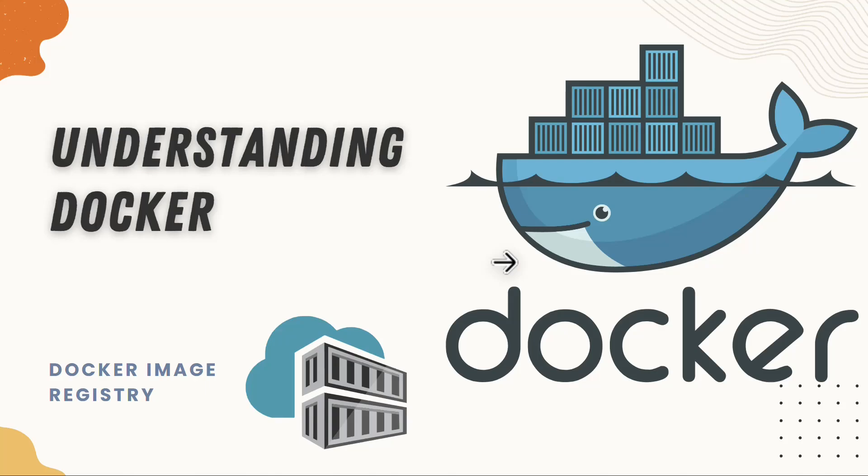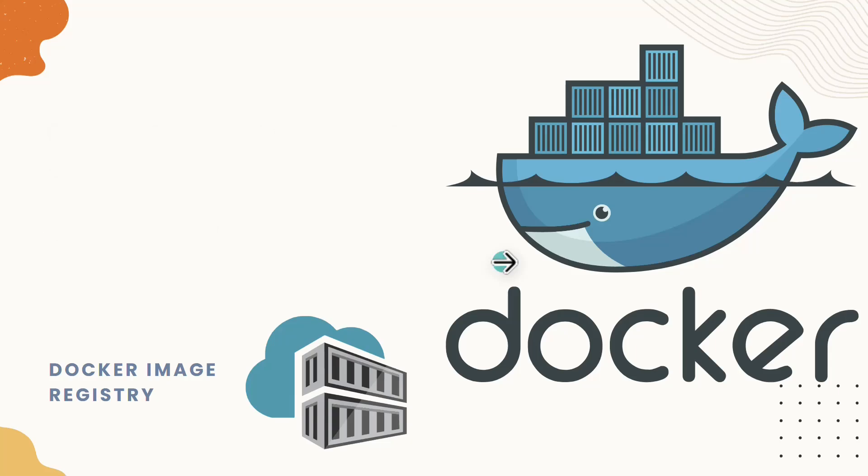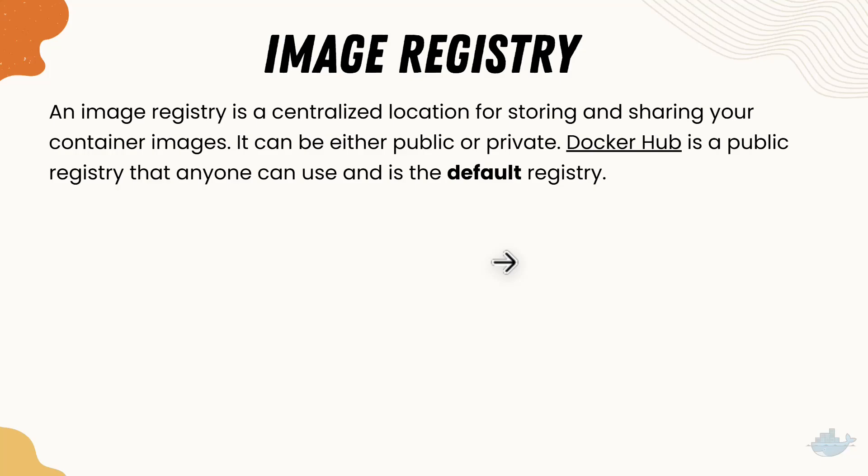Your Docker Desktop images need to be used by other team members as well. We've seen that the nginx or SQL Server applications available as Docker images are downloaded from Docker Hub. They were built on somebody's local machine and pushed to Docker Hub so others can use them. That's exactly what we're going to do — push an image into a centralized image registry so it can be used from anywhere. An image registry is a centralized location for storing and sharing container images.